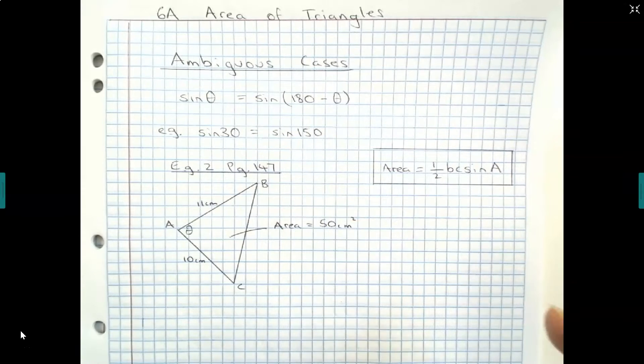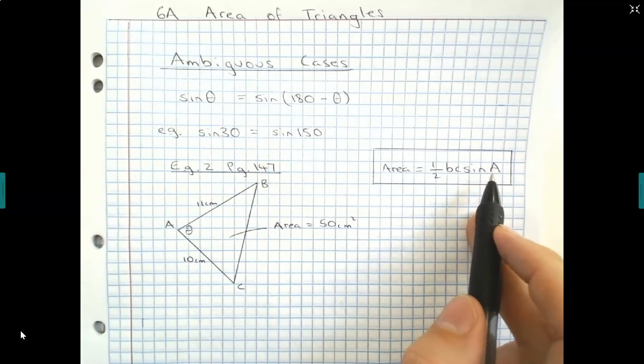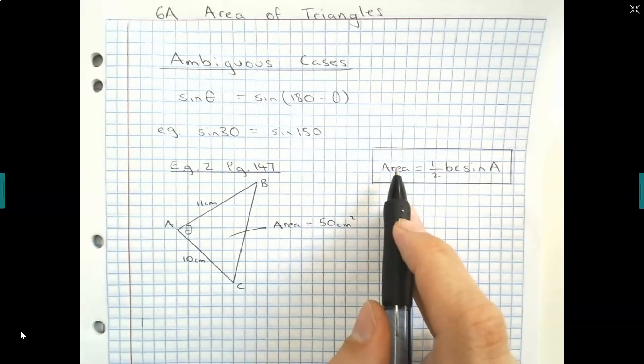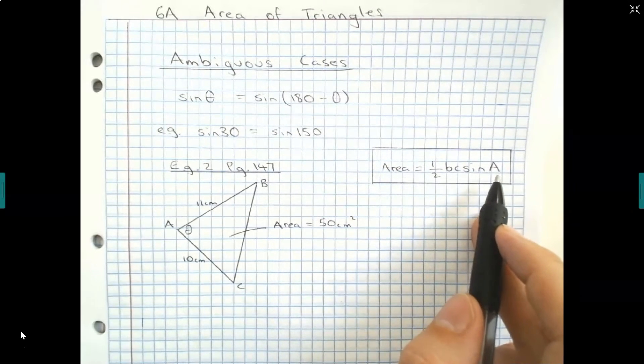So what you may realize when you look at this is that I can have two angles that will result in the same area: sine of theta and sine of 180 minus theta. So let's have a quick look.